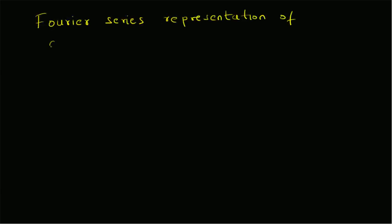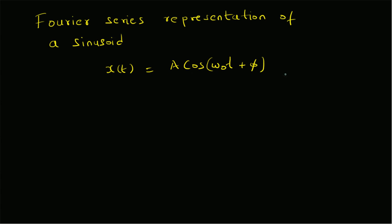Hello, welcome. In this short video, let us look at the Fourier series representation of a sinusoid. Consider the signal x(t) = A·cos(ω₀t + φ). We want to find out the Fourier series expansion or Fourier series representation of this signal.